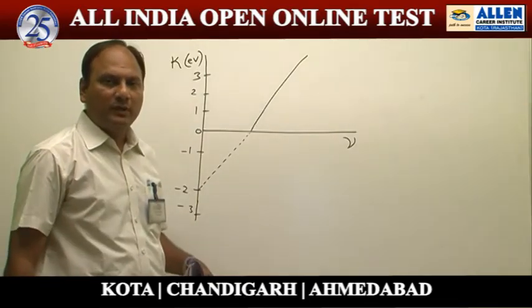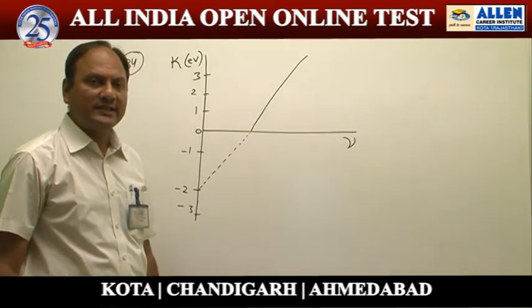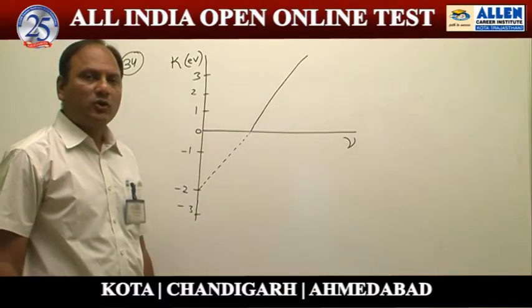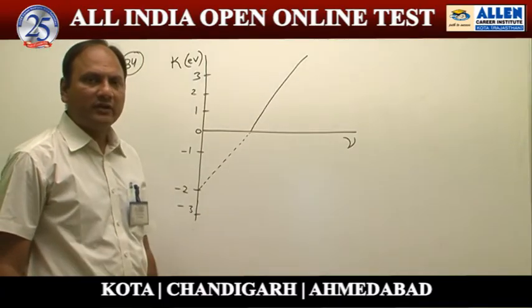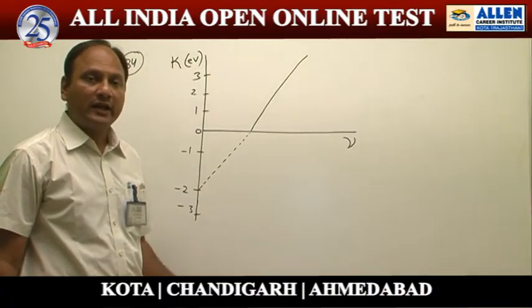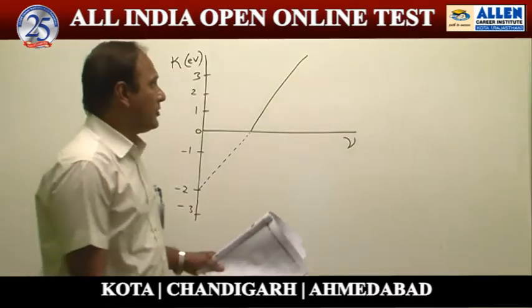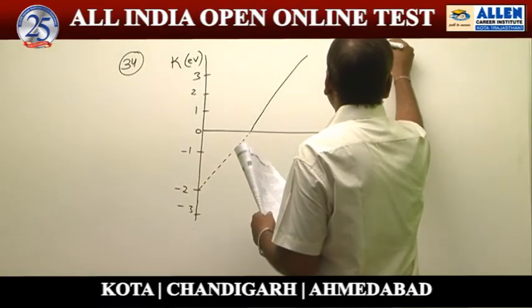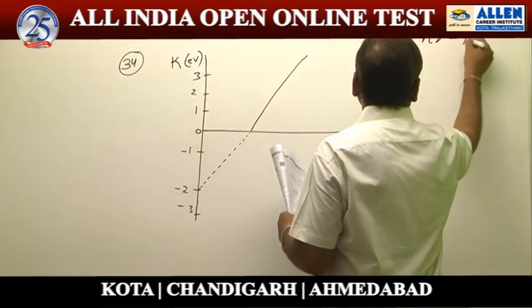Question number 34. A kinetic energy versus frequency graph in the photoelectric effect is given — kinetic energy of photoelectrons against frequency of incident light. It is a straight line with positive slope, intersecting the negative y-axis. Writing the equation for this graph gives: kinetic energy = hν − φ₀.